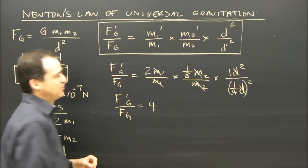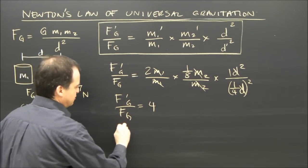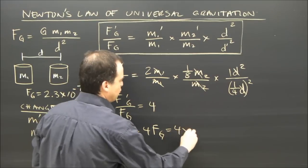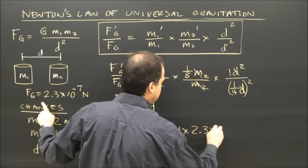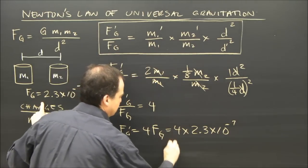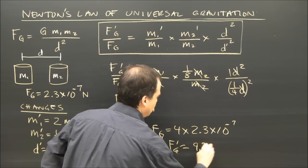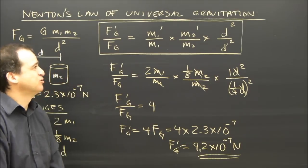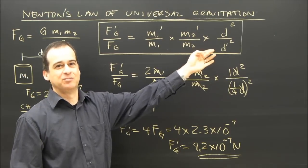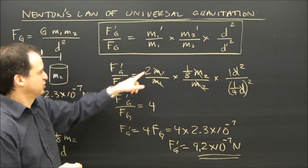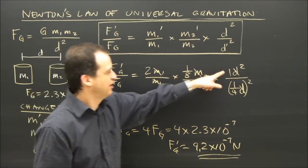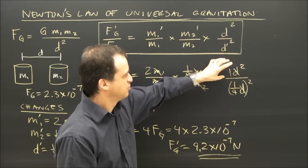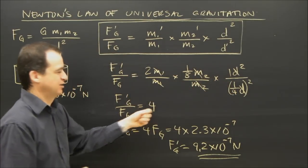I rearrange this: the new force of gravity is four times the old force of gravity, which is four times 2.3 times 10 to the negative 7 — so gravity is now 9.2 times 10 to the negative 7 newtons. There you go — just a different way of doing it. If you have trouble understanding it, do it a couple dozen times and you'll realize the simple way — 2 times one-eighth times one over one-quarter squared — gives the same result.